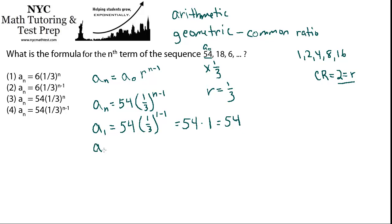And just for completeness, we'll check one more, and you'll see that it works. So a sub 2 should be 54 times the common ratio, 1/3, raised to the 2 minus 1. So that is 54 times 1/3 to the 1, which is 54 times 1/3, which is 18. And a_3 will work as well. So the best choice is 4.